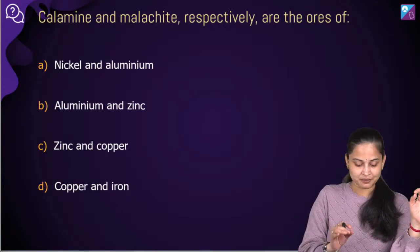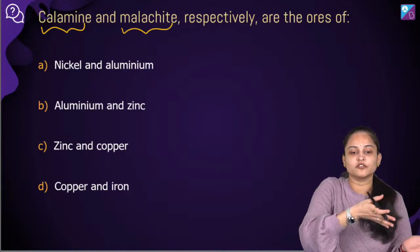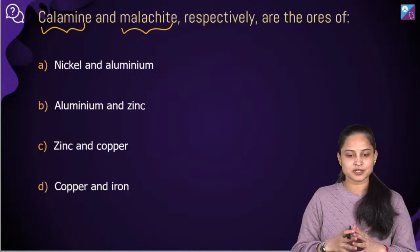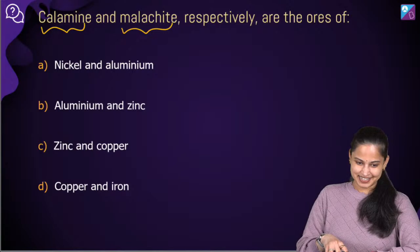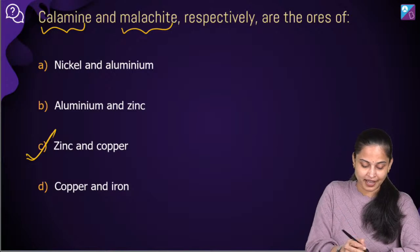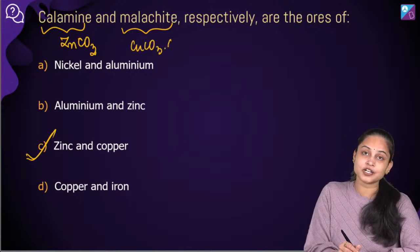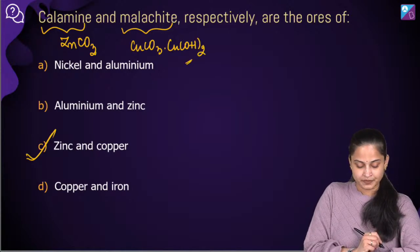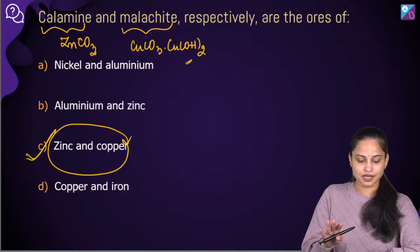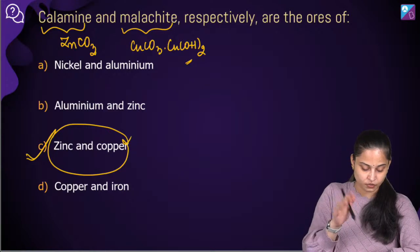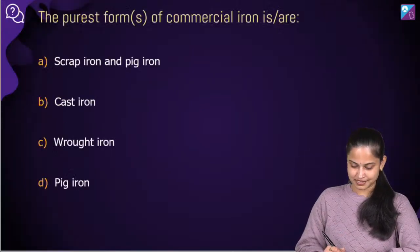Very simple, easy question: calamine and malachite respectively are the ores of? The formula of calamine is ZnCO₃ and the formula of malachite is CuCO₃·Cu(OH)₂ — the ore of copper. So calamine and malachite are the ores of zinc and copper respectively. Option number C is the right answer.